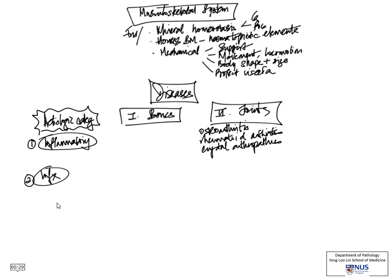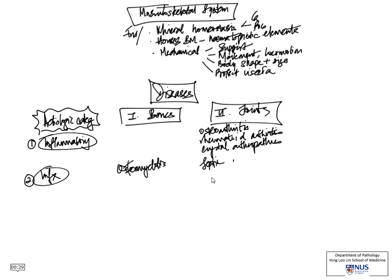The next category is infection. Infection involves both the bones and joints — it is called osteomyelitis in the bones and septic arthritis in the joints, and this is most frequently caused by bacterial organisms.